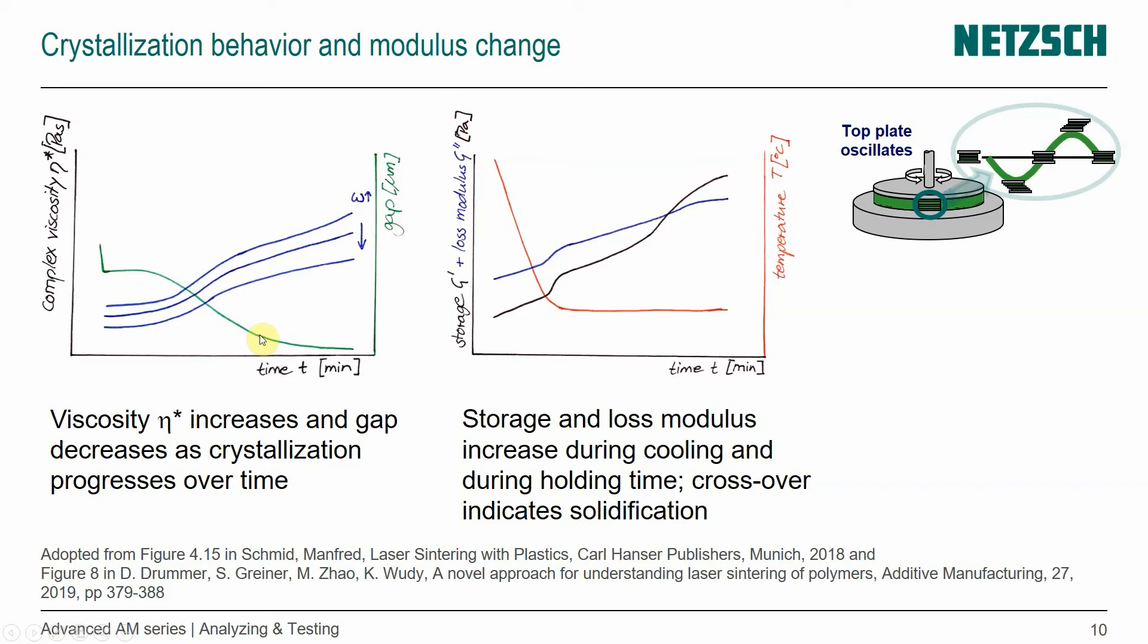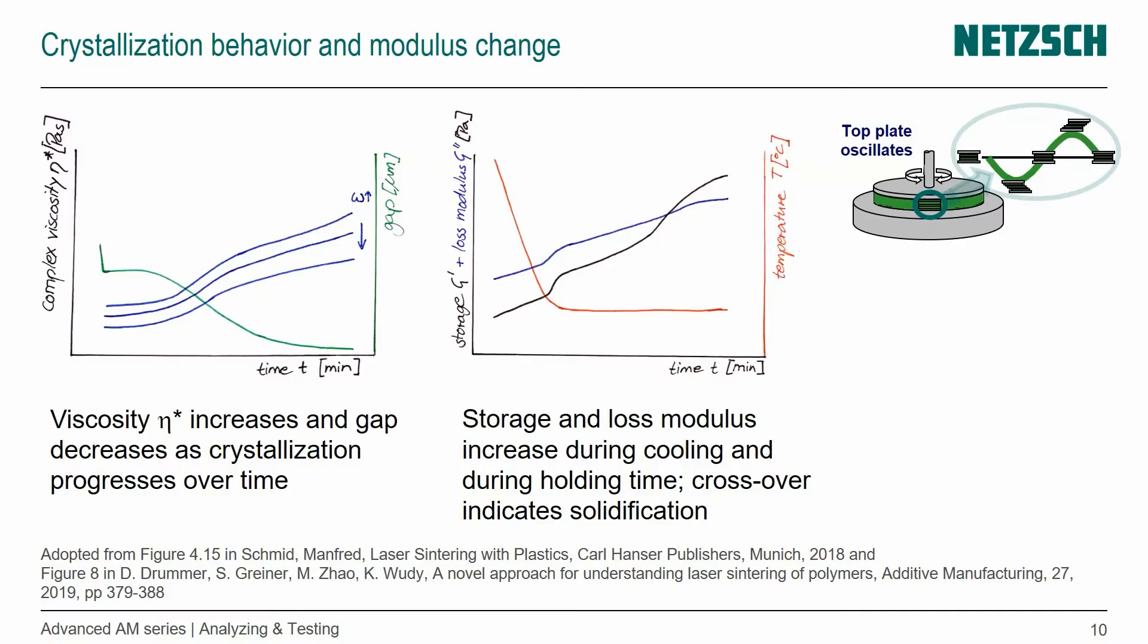We looked previously at the isothermal crystallization behavior in differential scanning calorimetry, and we saw that crystallization is a time-dependent process, and that's exactly the effect we see here. But here we see its effect on the flow behavior of the material. So the longer we wait, the more resistance to flow we actually get. The coalescence would get worse and worse. But obviously that happens on very fast timescales.